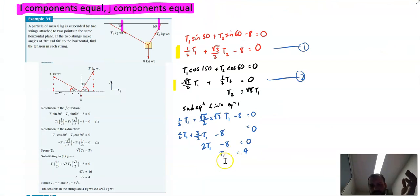So that's the tension in string one, four kilogram weight. Now for T2, obviously just shove four in for T1, probably into this equation here and you'll get root three times four, four root three.